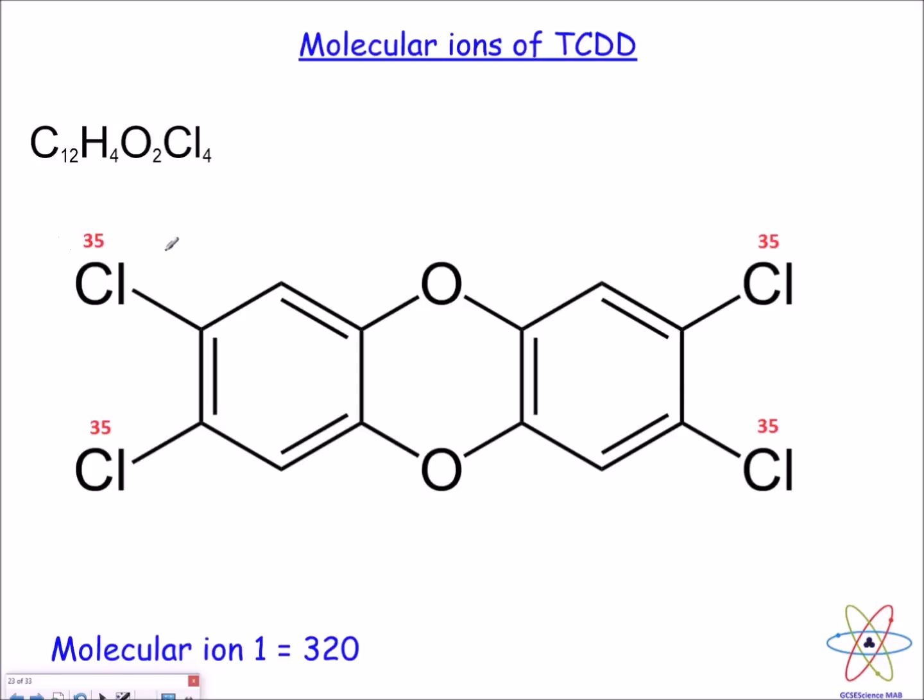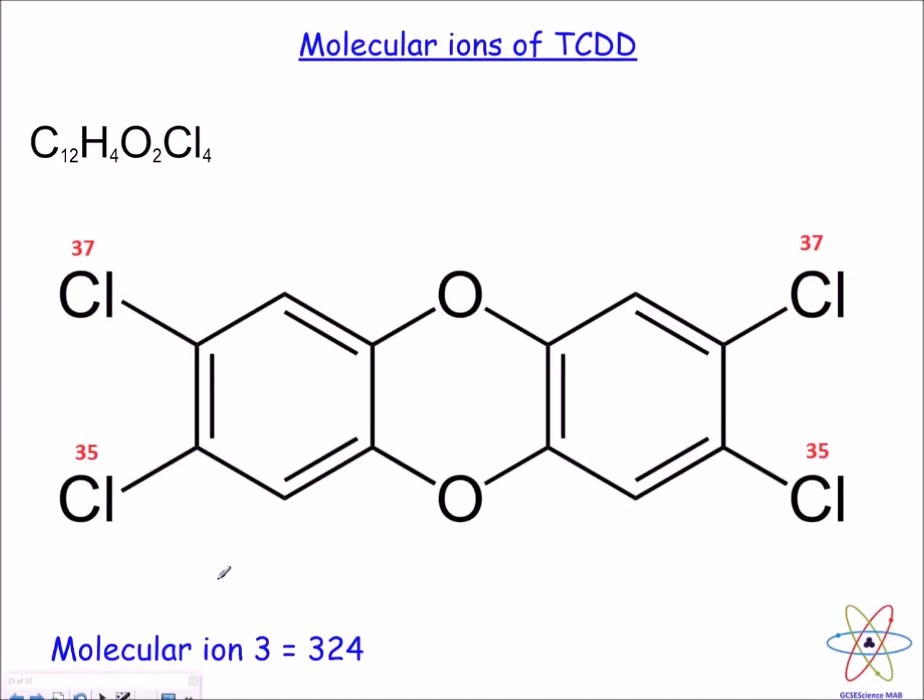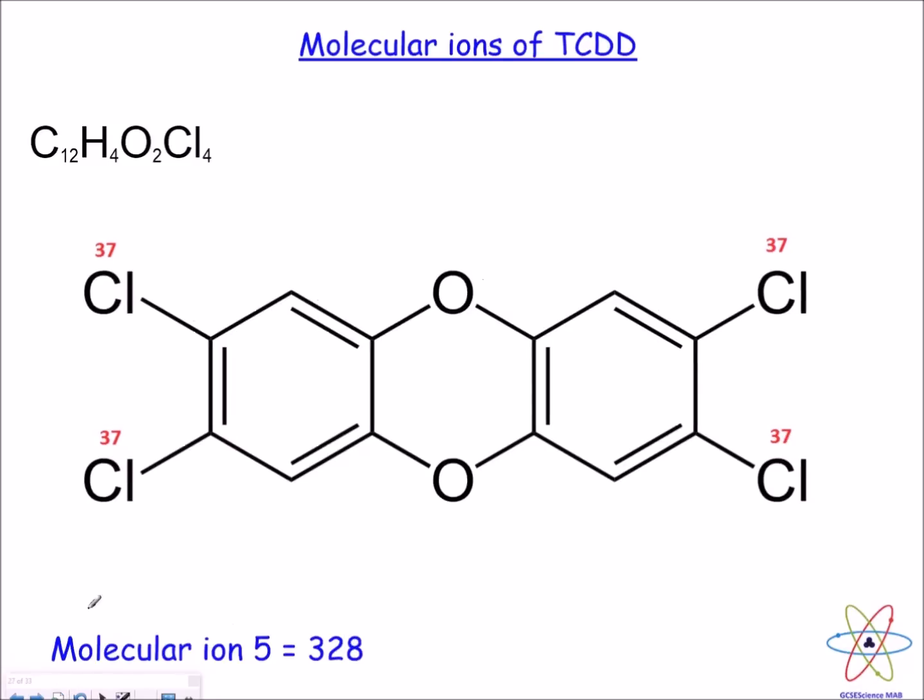The next thing we have to do is to substitute one of these chlorines with a chlorine-37. That changes the mass number to 322. This is a different molecular ion, so that's molecular ion number two. Then you change another chlorine to chlorine-37. Now you've got molecular ion number three. You change the third chlorine to 37. So now you've got three chlorine-37s and one chlorine-35. That gives you your molecular ion number four. Finally, you change all of them or the last chlorine to chlorine-37 and you get your fifth molecular ion.